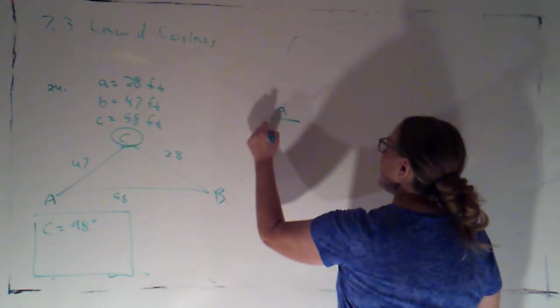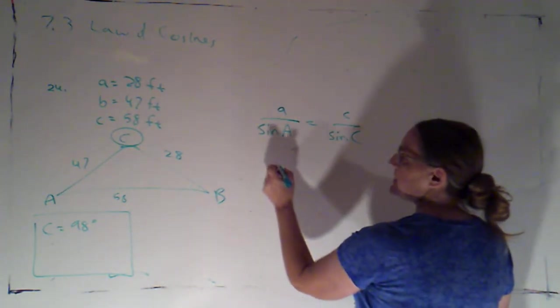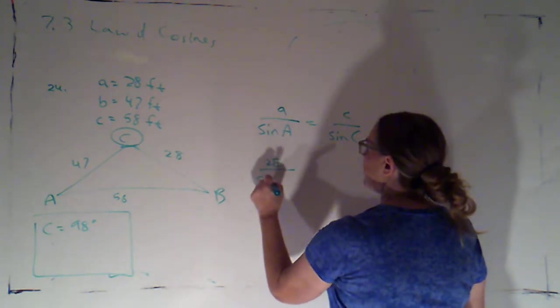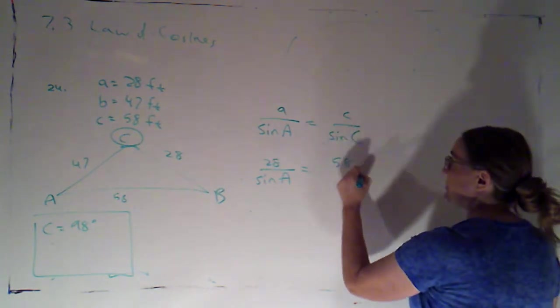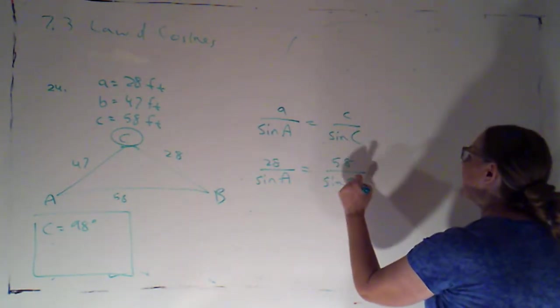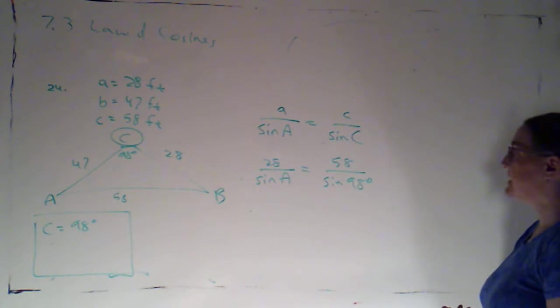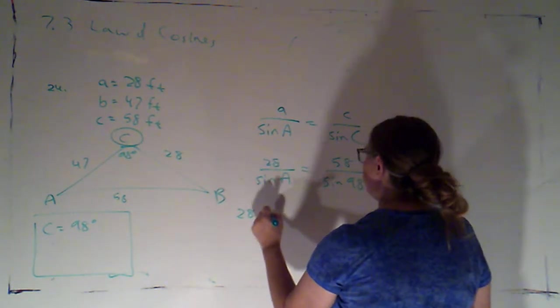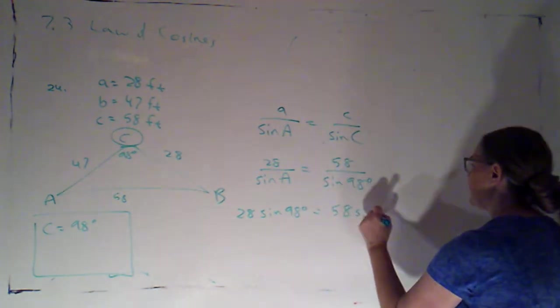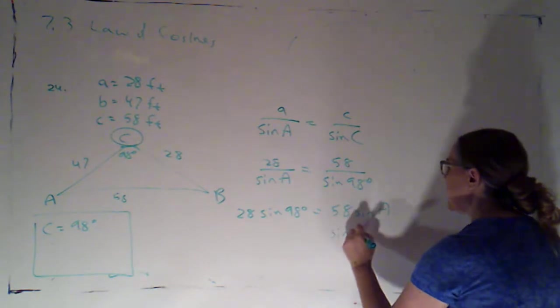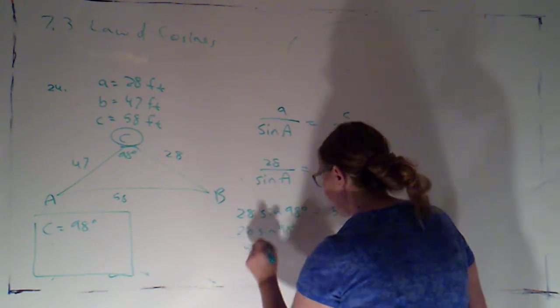So I'm going to say A over sine A is equal to C over sine C. So that would be 28 over sine of A, which I don't know, is equal to 58, which was my side C, over sine of 98 degrees, because that's what we found using law of cosines. Okay. So I can cross multiply. 28 times sine of 98 degrees is equal to 58 times sine of A. That means sine of A is going to be 28 sine of 98 degrees over 58.